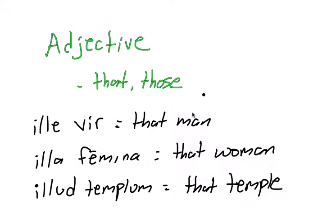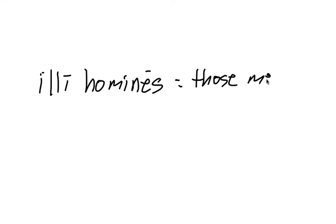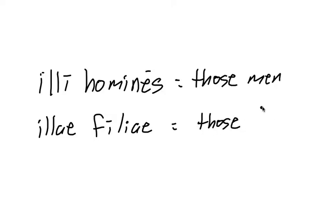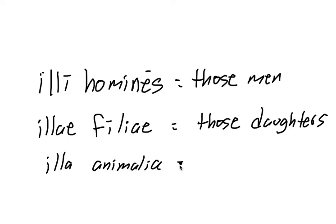And it works the same in the plural. So illi homines would be those men. Illae filiae would be those daughters. And illa animalia would be those animals.